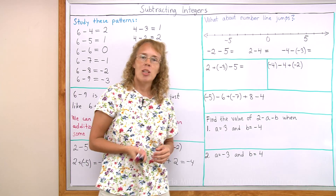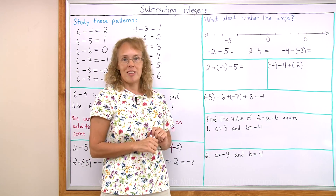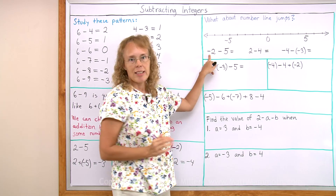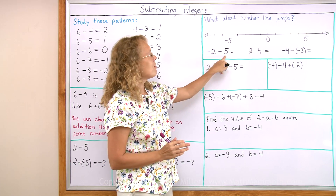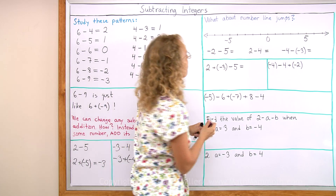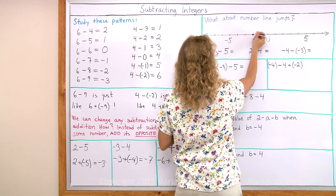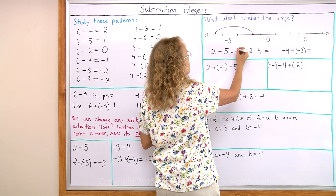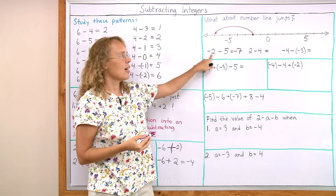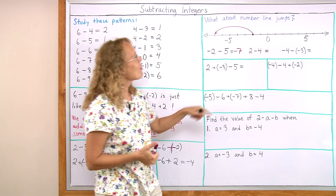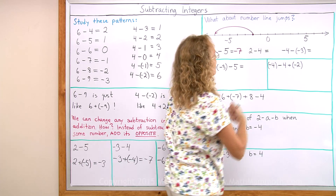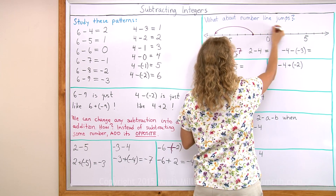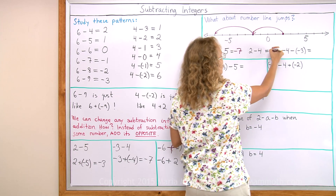So the number line jumps with subtraction work just fine. Let me show you some. This would mean that I start at negative 2 and I jump 5 steps to the left — start here, 5 steps to the left, so it goes over here to negative 7. I start at the negative side and I get more negative. 2 minus 4 starts at 2 and jumps 4 steps to the left, over here to negative 2.